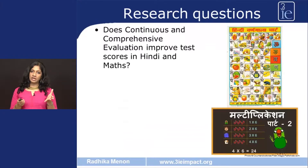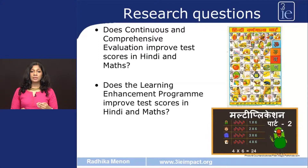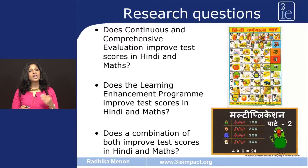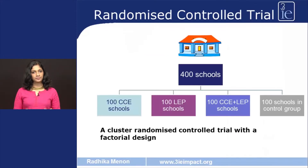The researchers went in with a few fundamental questions: Does the Continuous and Comprehensive Evaluation system improve test scores in Hindi and Maths? Does the Learning Enhancement Program improve test scores in Hindi and Maths — and although the program focused on Hindi, they looked at spillover effects on Maths. And finally, does the combination of both programs improve test scores? For this impact evaluation the researchers used a randomized controlled trial. To know more about randomized controlled trials, please watch Video Lecture 3 in this series.